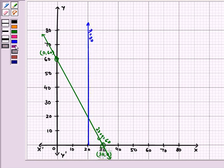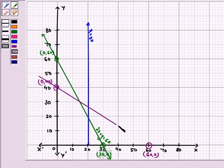And the third line is: when X is 0, Y is 40, so this will be this point. And when Y is 0, X is 60. So we have the required line like this.